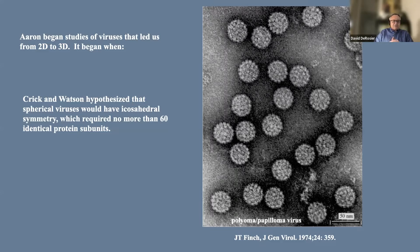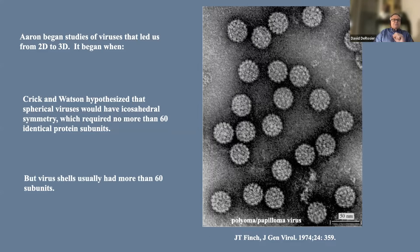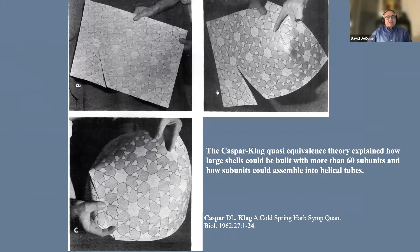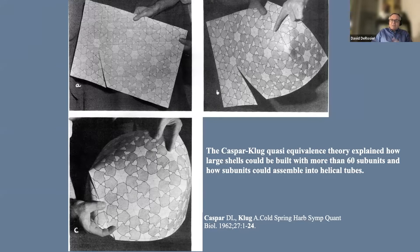Crick and Watson hypothesized icosahedral symmetry, but that would require virus shells to have no more than 60 subunits. As Tony has said, many shells had more than 60 subunits. The solution — how you could build a shell with icosahedral symmetry and more than 60 subunits — was the idea of introducing strain into the structure so that you could have five-fold and six-fold interactions that were almost but not quite equivalent: hence quasi-equivalence.